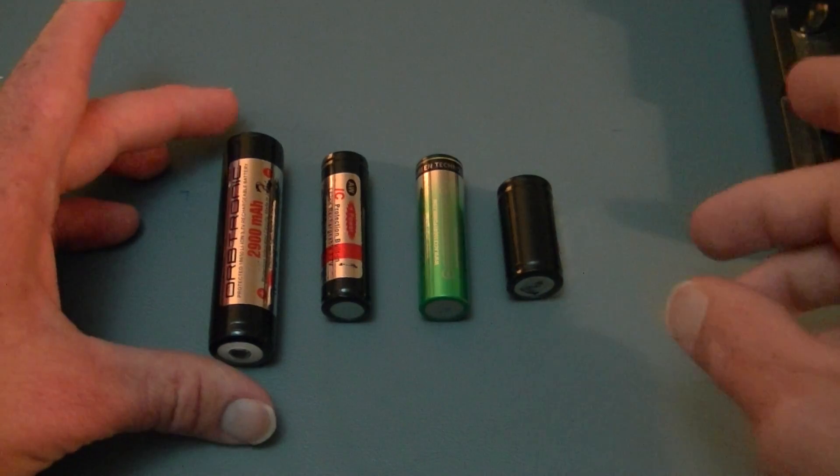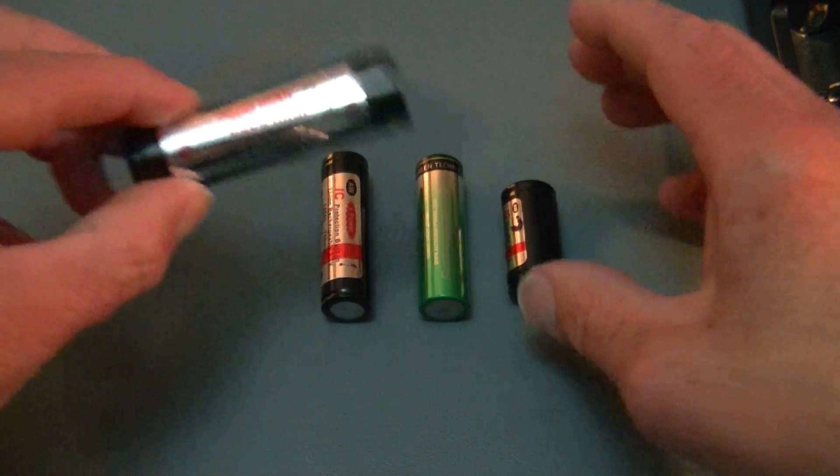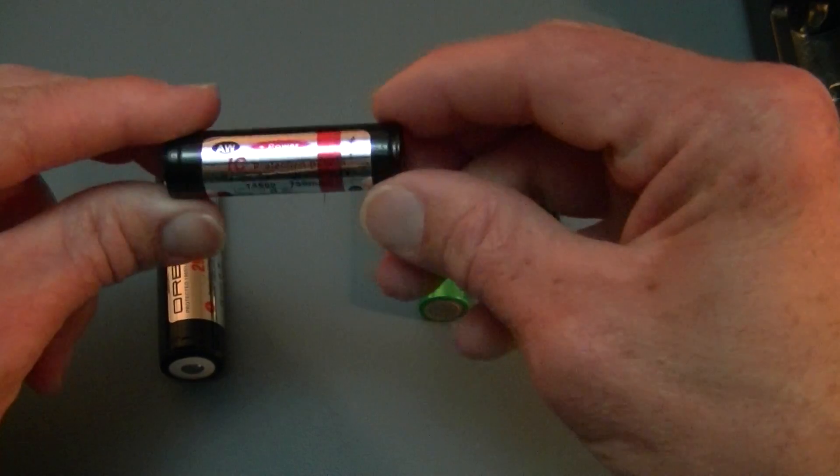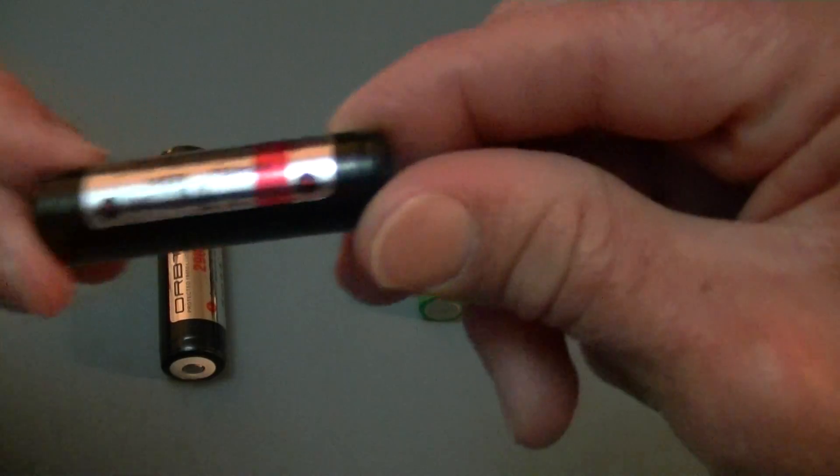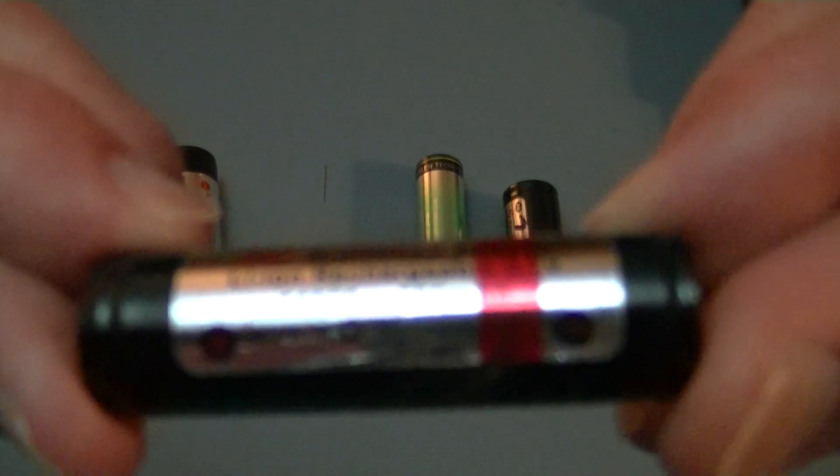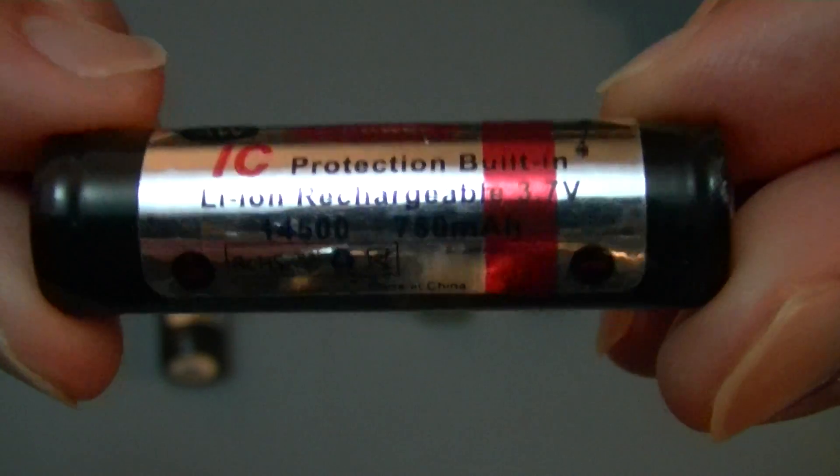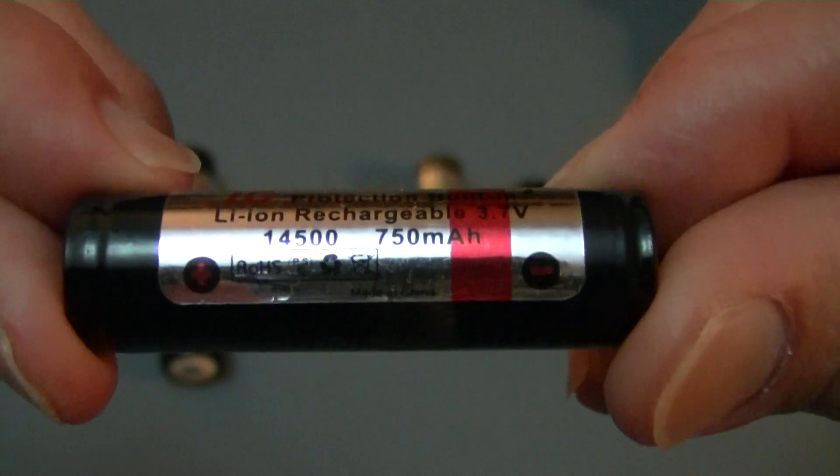But let's take a look here. First of all you've got some of your basic lithium battery sizes here. You've got the 18650 and these are 14500s which are the exact same size as regular AAs. But if you see right here it does say 14500 on it. If I can get the camera to focus. There you go. 14500 750 mAh and there it is.